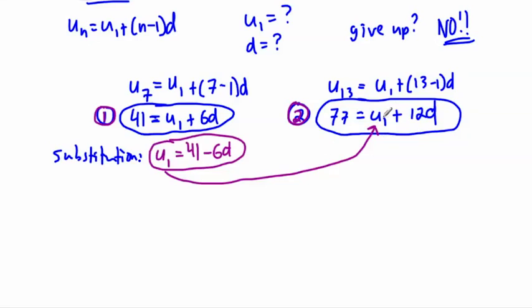And what I do with this now, of course, it depends on d, but I take that and I put it into here. I substitute it into here. So then I have 77 equals, and instead of u1, I'm going to put in 41 minus 6d. And then after that, I'm going to say plus 12d. So do you see, I'm just plugging in for u1, I'm replacing it or substituting 41 minus 6d in there. Well, then I can just deal with it. I can combine like terms, so this minus 6d and the plus 12d, those can sort of be combined.